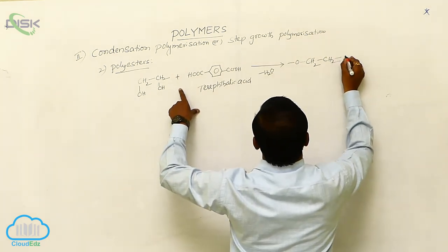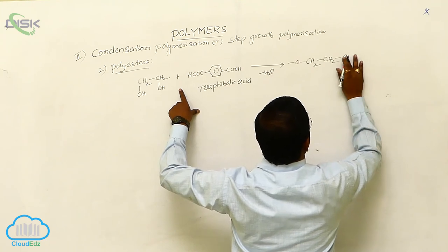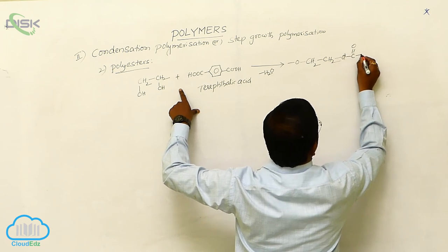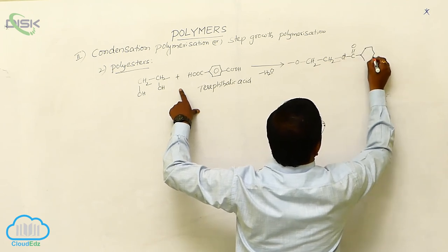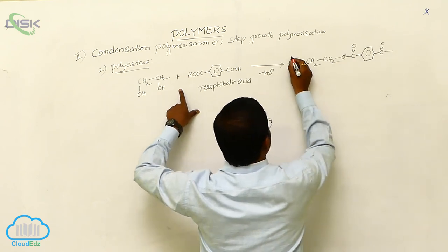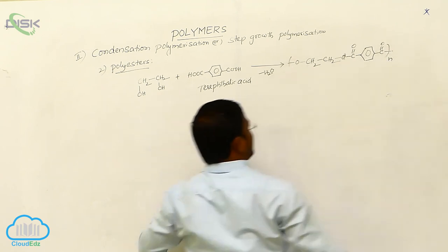This is whereas O, C=O, benzene, C=O, O. So it continuously takes place.